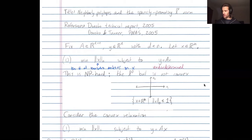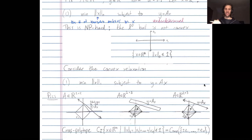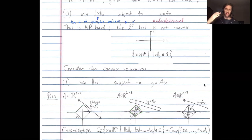The L1 norm of a vector is simply the sum of the absolute values of the entries: the absolute value of the first coordinate plus the second, and so on through the last coordinate. In 2D, the L1 ball is the set of all points where the absolute value of x1 plus the absolute value of x2 is at most one — that's a diamond shape. In 3D, it's an octahedron — the set of all points where the absolute value of x1 plus absolute value of x2 plus absolute value of x3 is at most one.